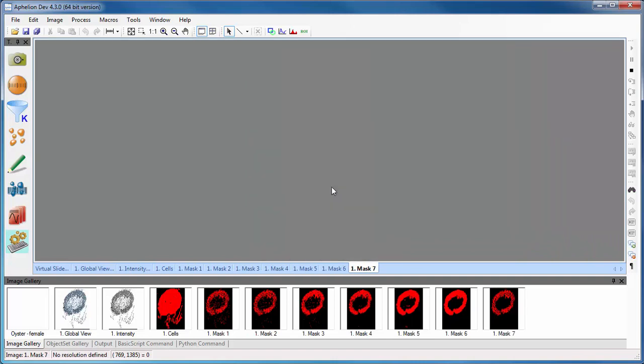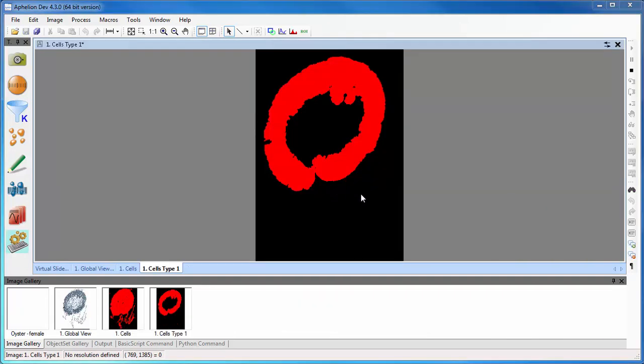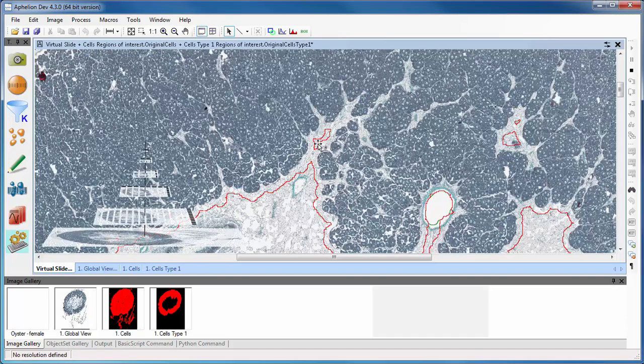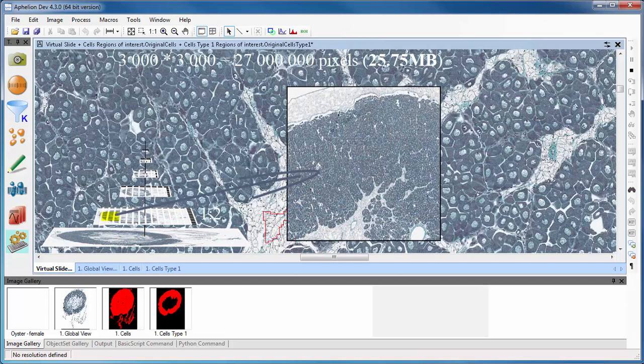The software can then segment the cells of the region of interest and make a preliminary measure of its area. The segmented region or regions can be displayed as overlays on the full image to allow visual verification.